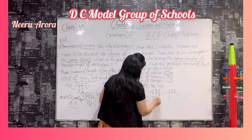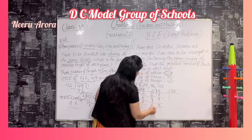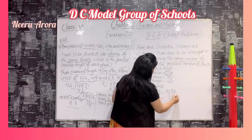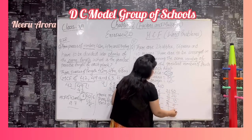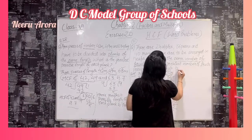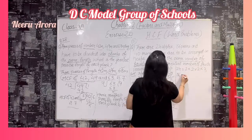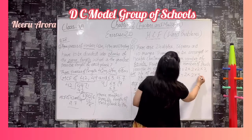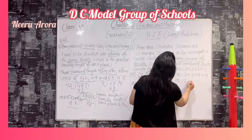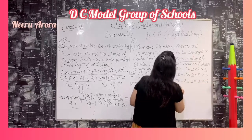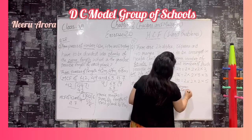Continuing the factorization: 36 = 2 × 2 × 3 × 3, and 40 divided by 2 gives 20, then 10, then 5, so 40 = 2 × 2 × 2 × 5. Now we write all the factors: 24 = 2 × 2 × 2 × 3, 36 = 2 × 2 × 3 × 3, and 40 = 2 × 2 × 2 × 5.